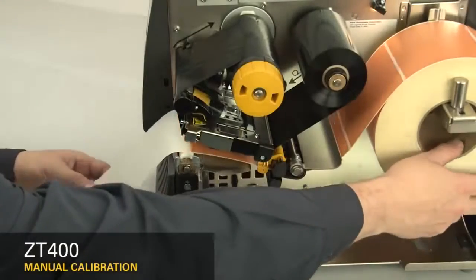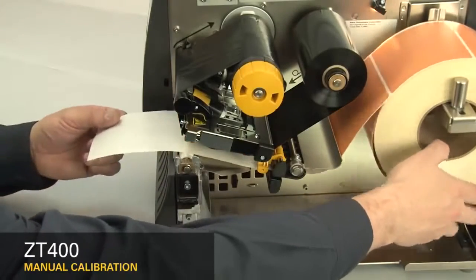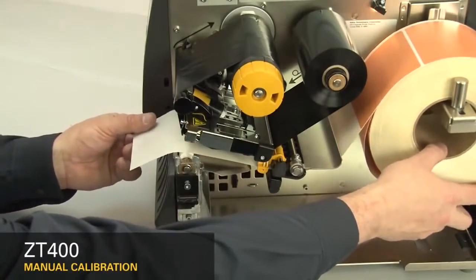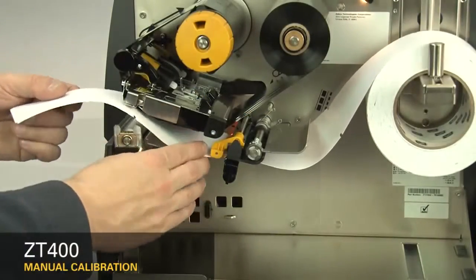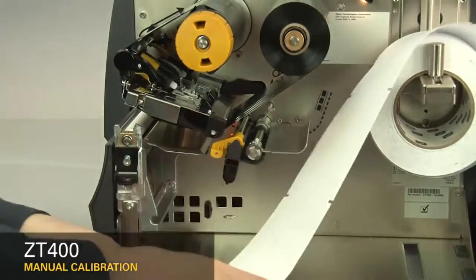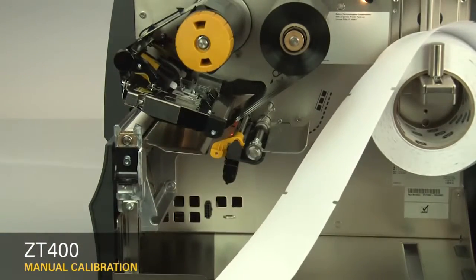If your media has a gap, also referred to as a web, remove labels and rewind the roll to ensure only liner is under the media sensors. If your media has holes or notches, or is a continuous roll with no start position features, remove the media entirely.